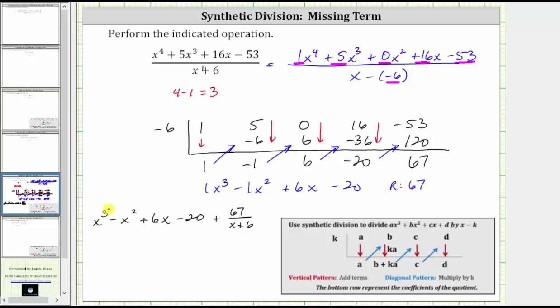You may also be asked to express the answer as x cubed minus x squared plus six x minus 20. And then because the remainder is 67, sometimes we just say r for the remainder is 67. Just be sure to give the final answer in the form requested.